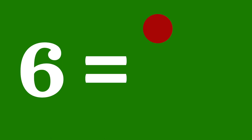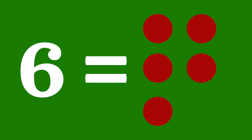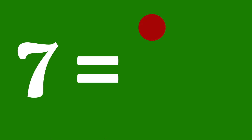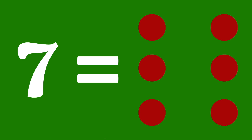Let's count six circles — six is equal to one, two, three, four, five, six circles. Let's count seven circles — seven equals one, two, three, four, five, six, seven circles.